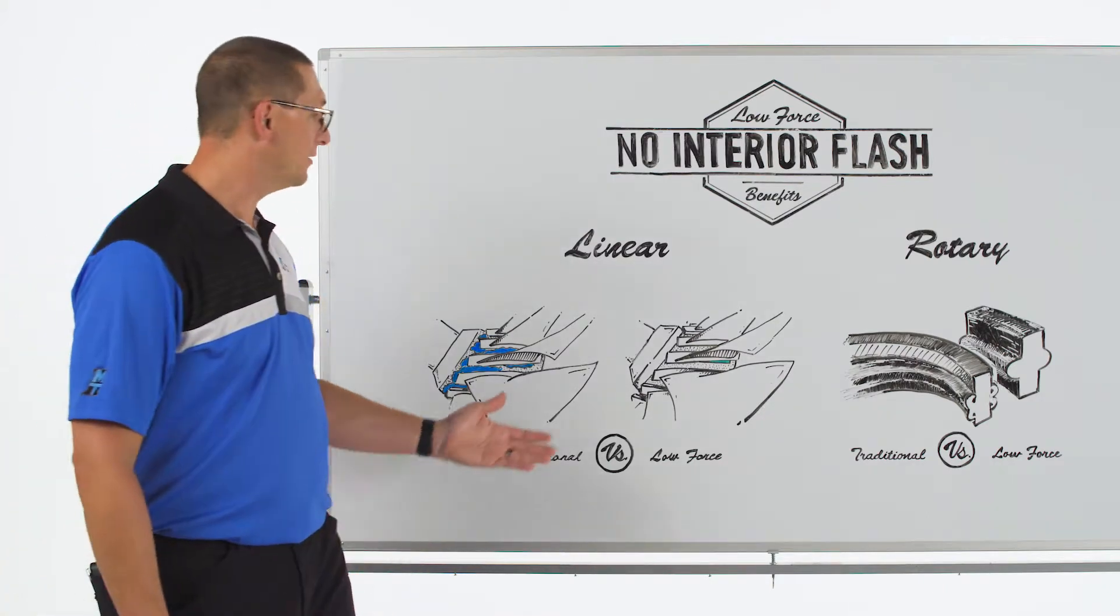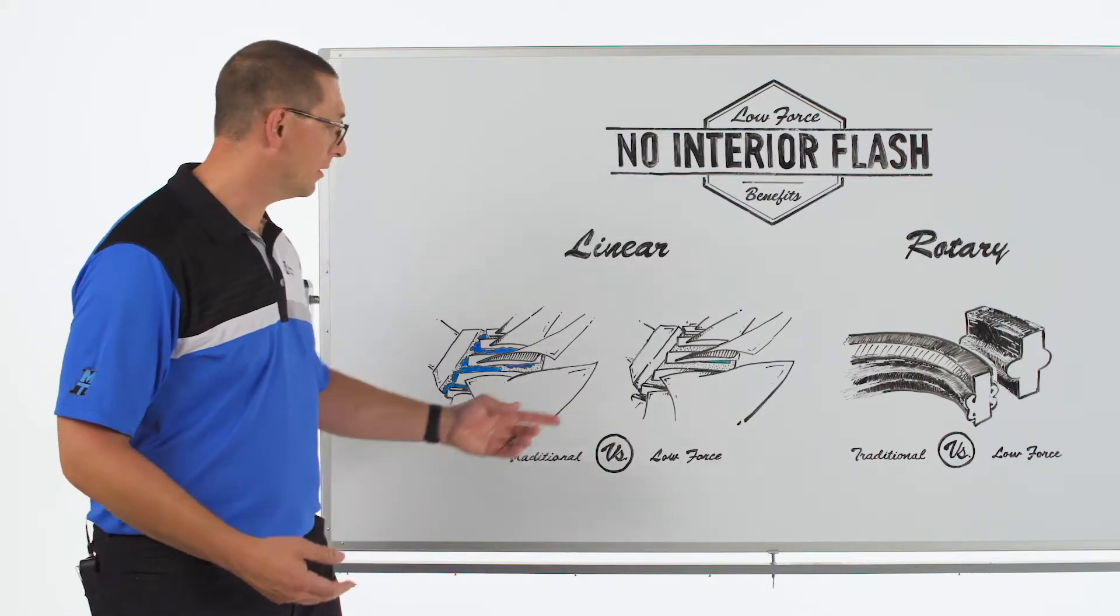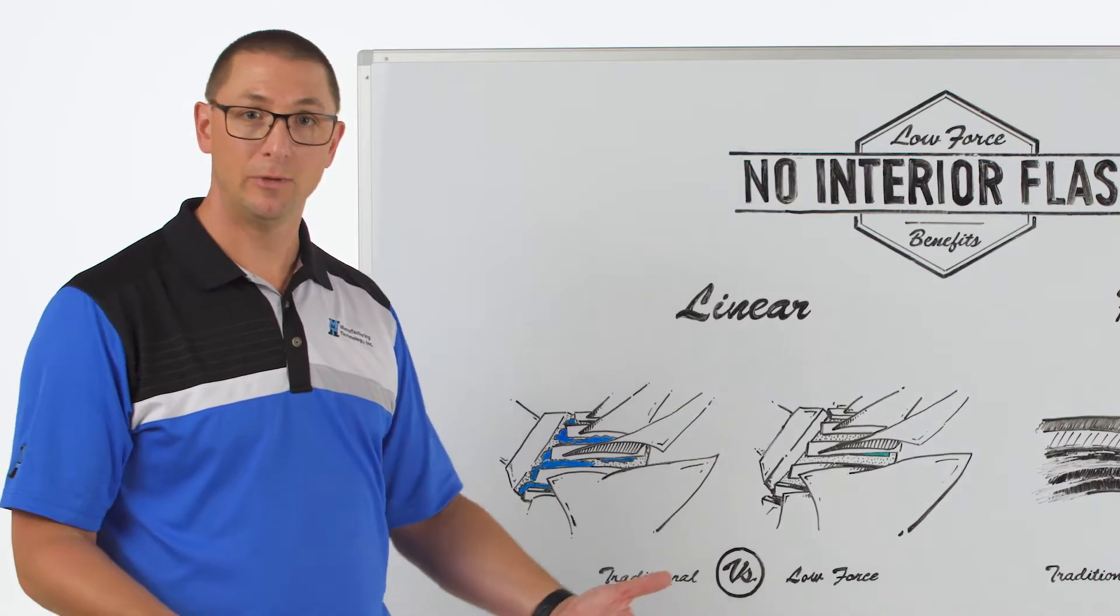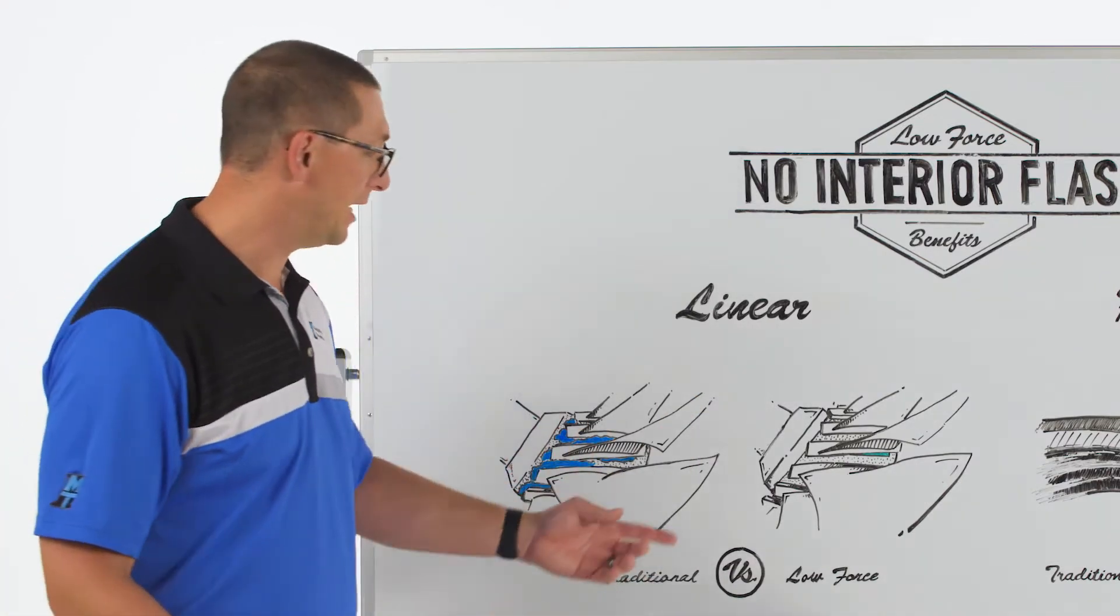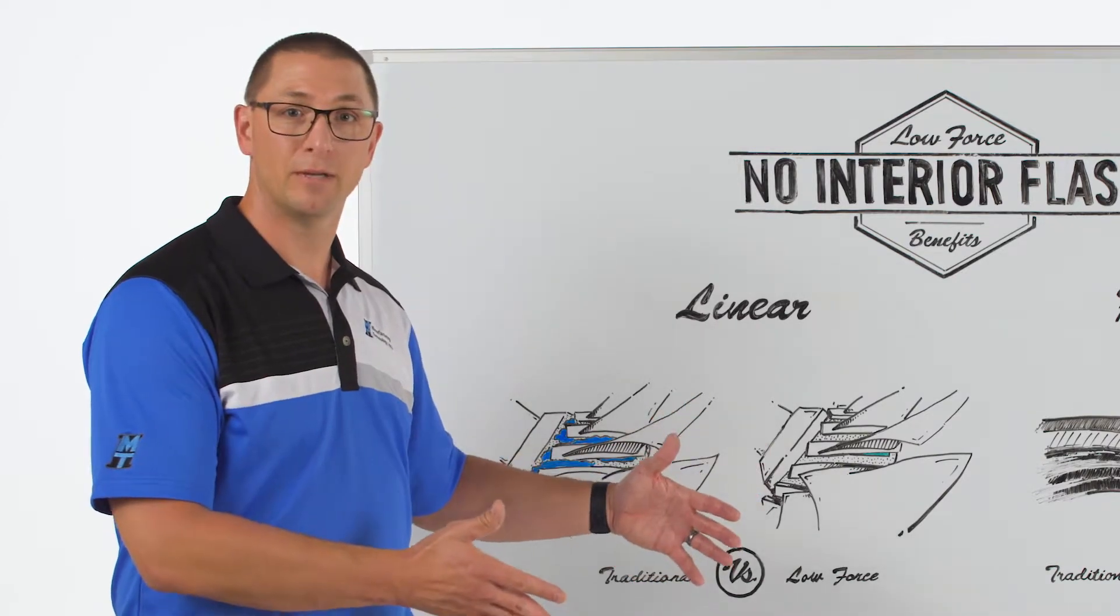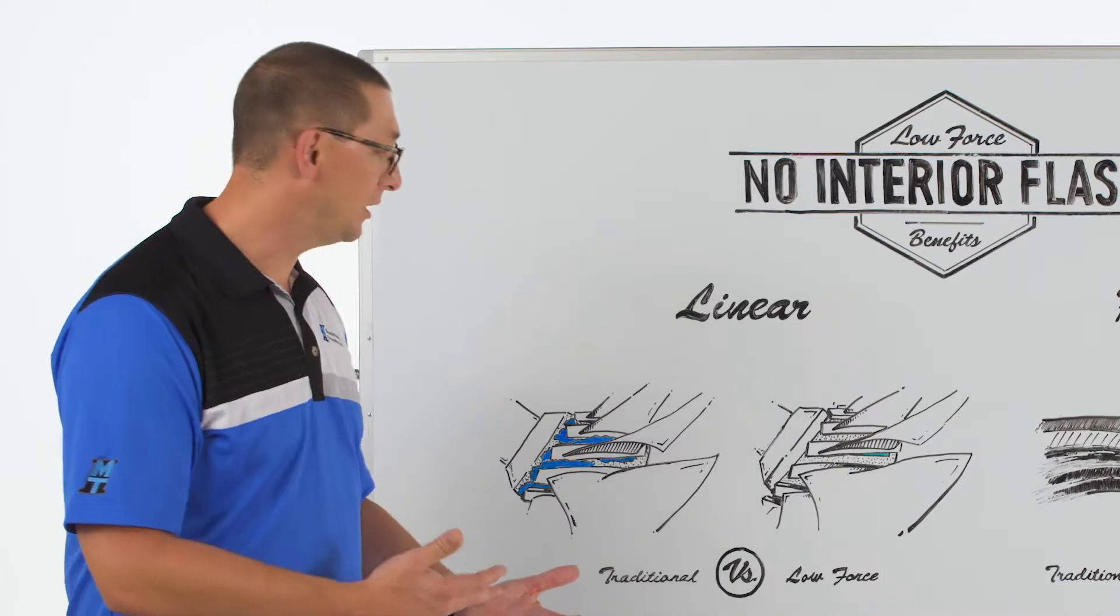If we contrast that with low force friction welding, we're going to get a bulge very similar to what we've seen before. But that bulge, even though I'm generating plenty of upset and cleaning the weld interface and expelling any contaminants, is contained in the same footprint as the weld collar.